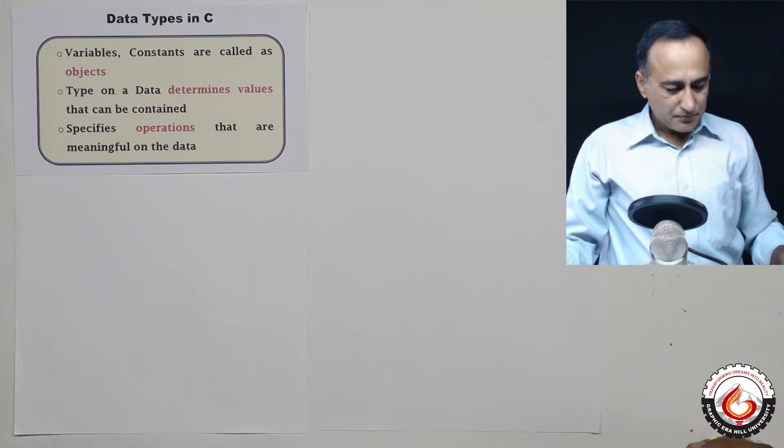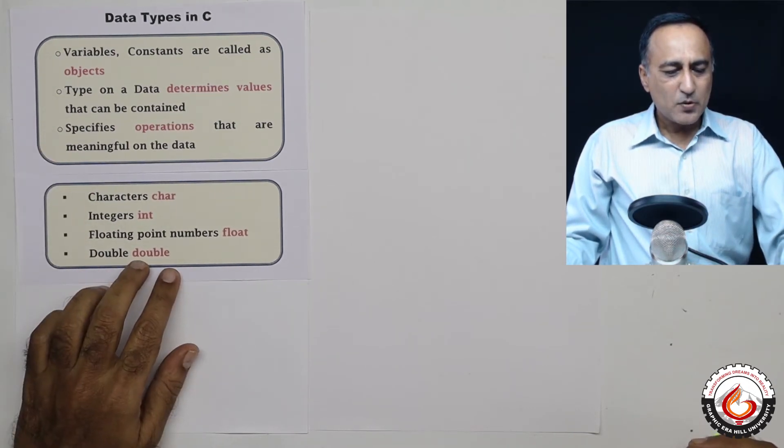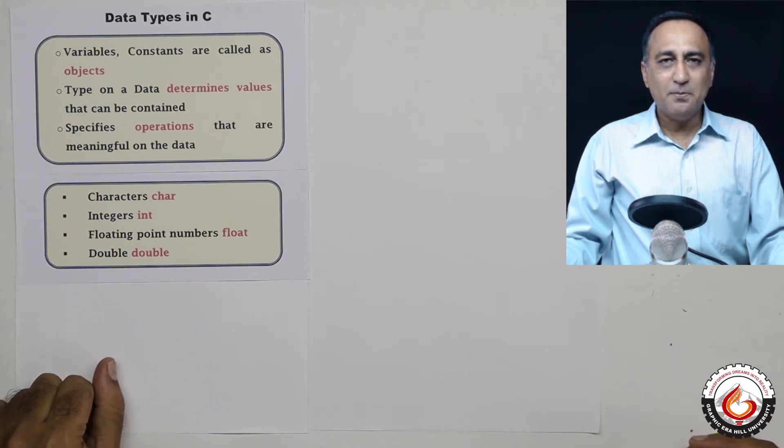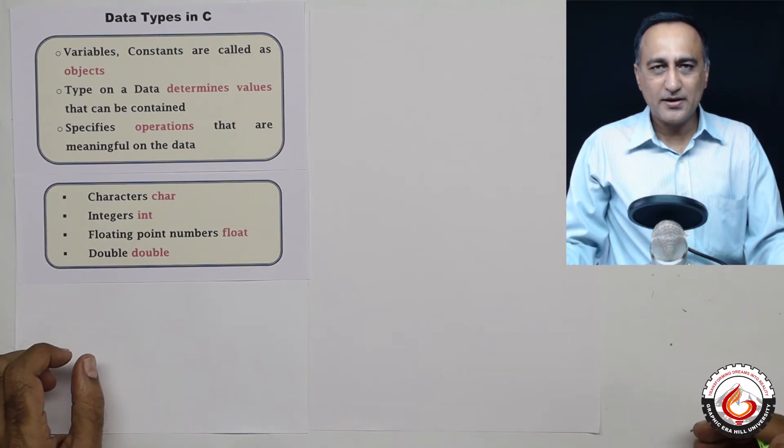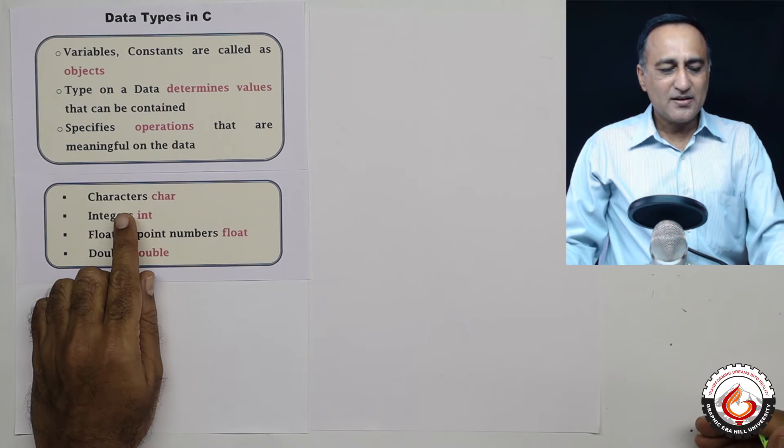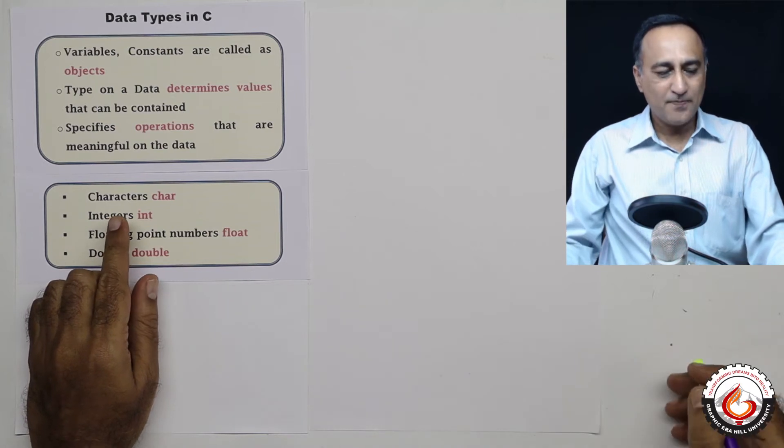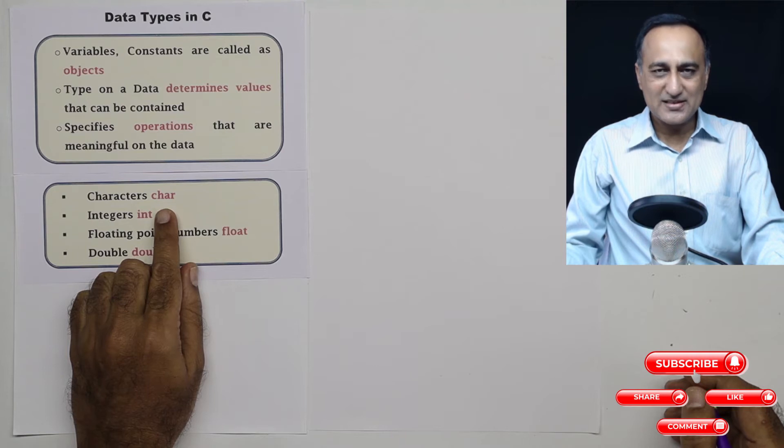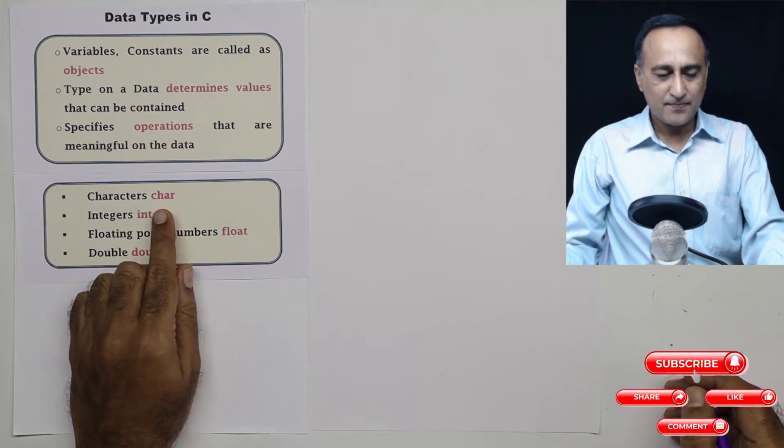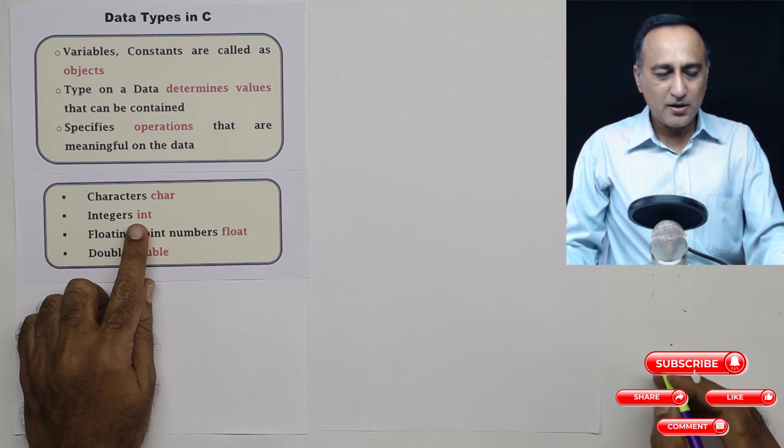Let's talk about the most frequently used data in C. C provides four types of built-in data and small variations which we will look at later. The first type is characters, represented by single characters like A, B, C, and is declared using the keyword char. Next is integer type of data, declared by the keyword int. It can be positive, negative, or zero, but cannot contain a decimal point.